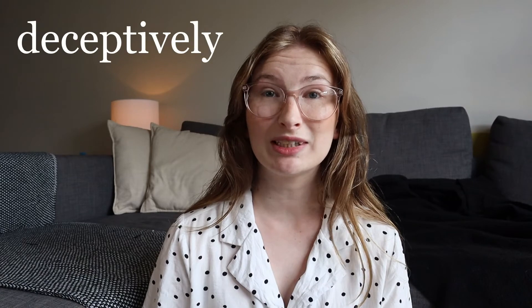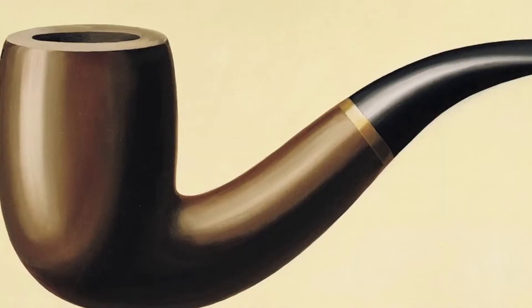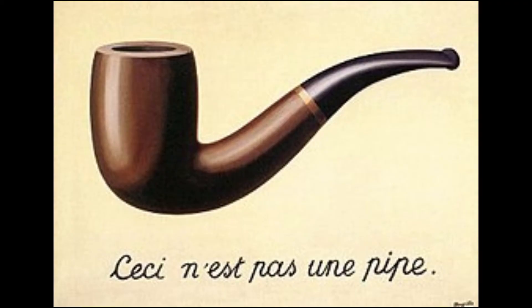The Treachery of Images is a deceptively simple work. At first glance you see a realistic painting of a traditional pipe on a yellow-cream background. Below it is some French text that means 'this is not a pipe.'